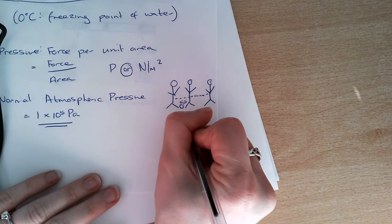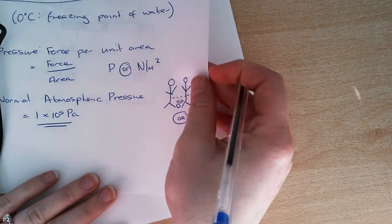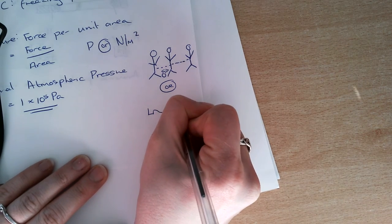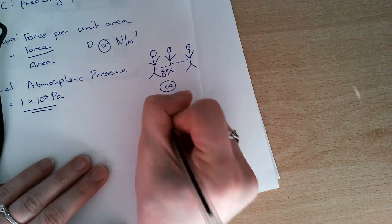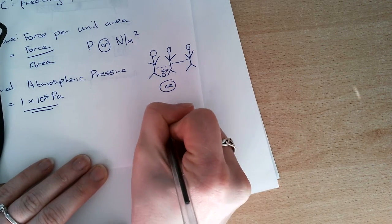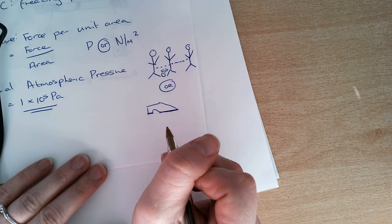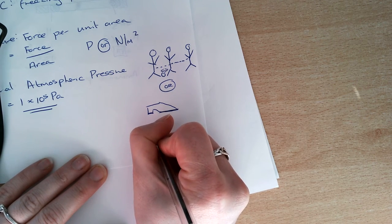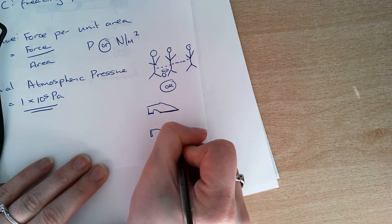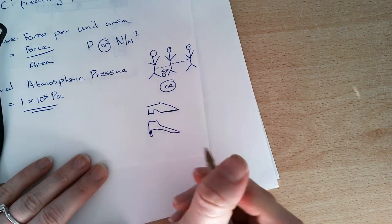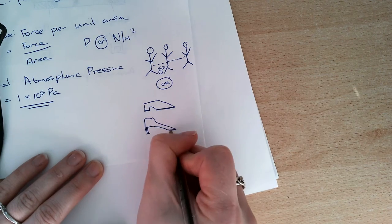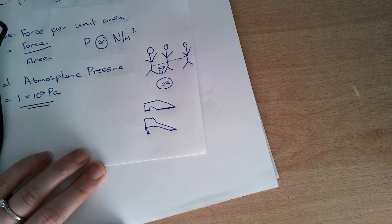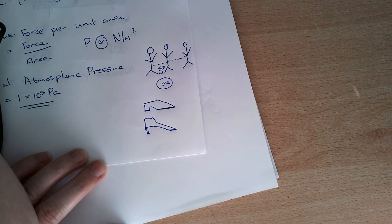Another example of pressure being affected would be wearing shoes. So I'll just firstly wear a runner here. If I look, there's a longer big area here touching the ground, but then if I change that into wearing a stiletto, there's less of an area touching the ground, so because of that I exert more pressure on the area.